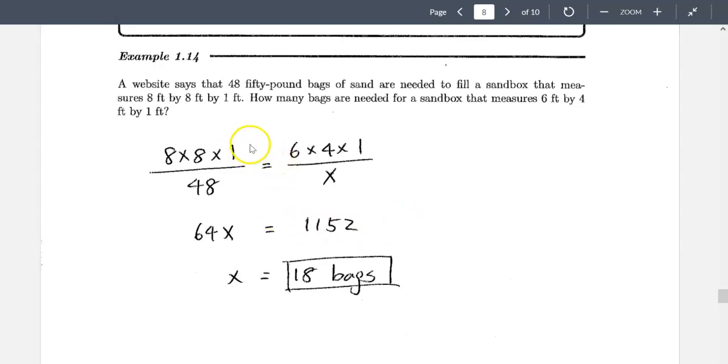So we have the volume on top versus how much sand on the bottom. So when we have an 8 by 8 by 1 we need 48 bags. If you have only 6 by 4 by 1, how many bags do we need? So again, volumes on top, number of bags on the bottom. We cross multiply, you show you, you give us the answer 18 bags.